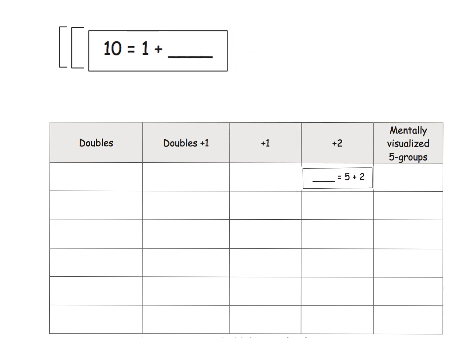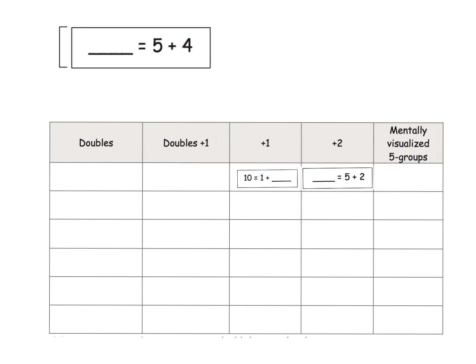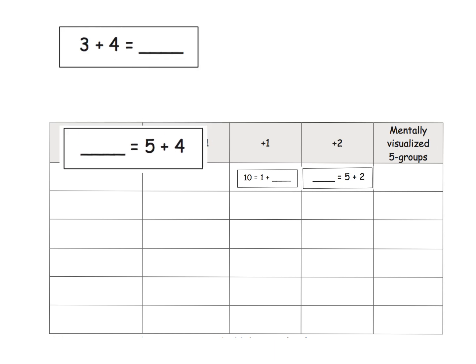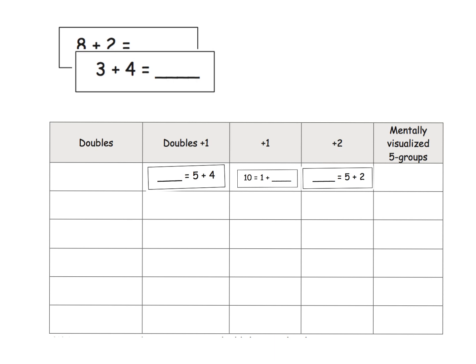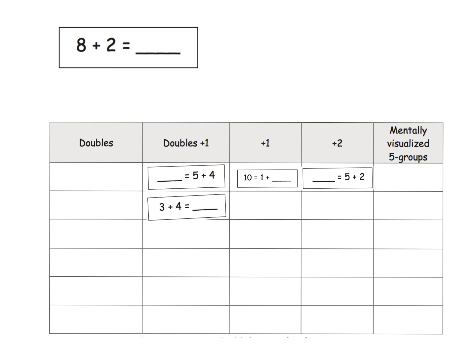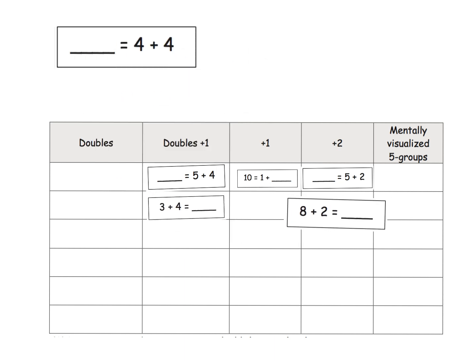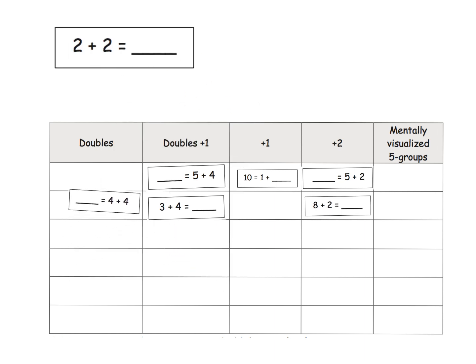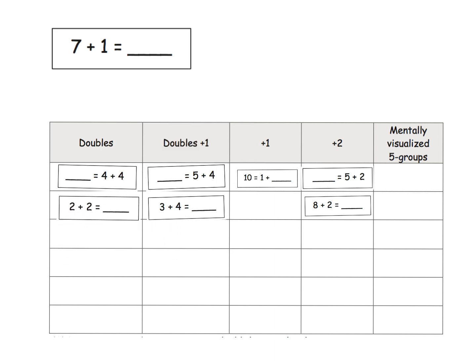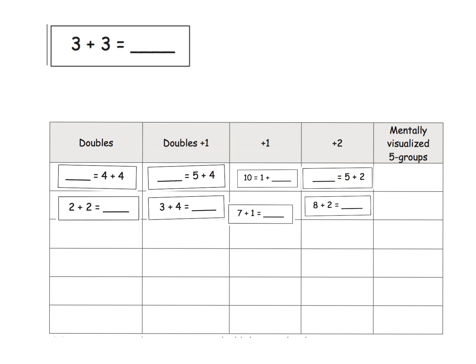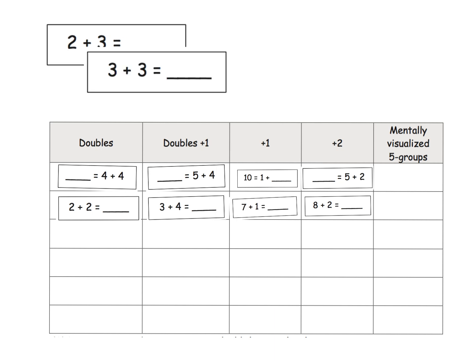I'd say that one goes right here. Then '10 is equal to 1 plus something' — I'd call that this one right here. '5 plus 4' — I'd say that's a double plus 1, so I'm going to put that here. '3 plus 4' is also a double plus 1. '8 plus 2' seems like it should go way over here. '4 plus 1' feels like a double, I'll put that right here.